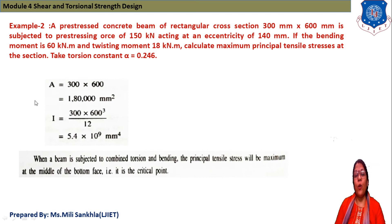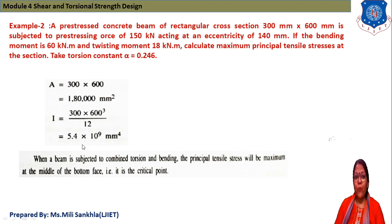First, find the area: A = 300 × 600 = 180,000 mm². Moment of inertia: I = BD³/12 = 5.4 × 10⁹ mm⁴.